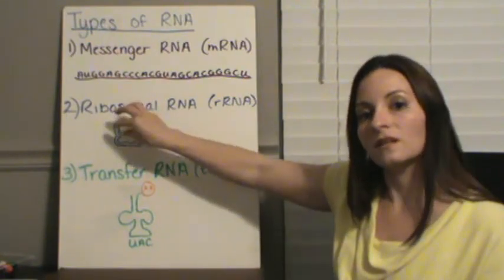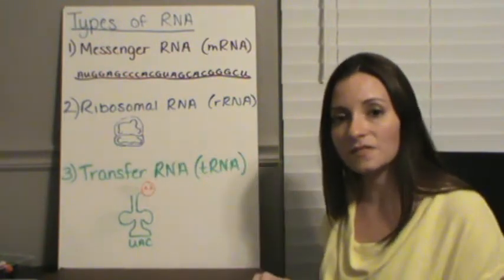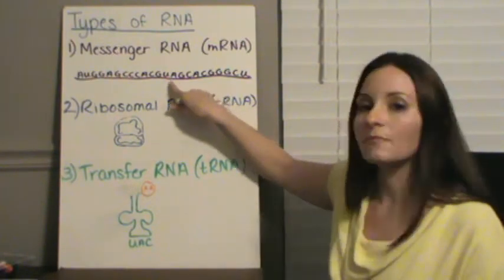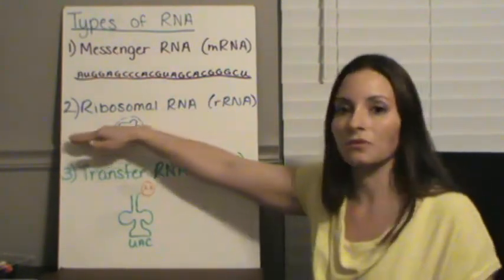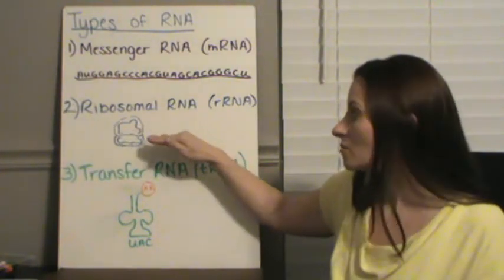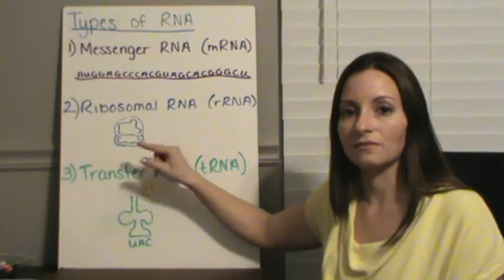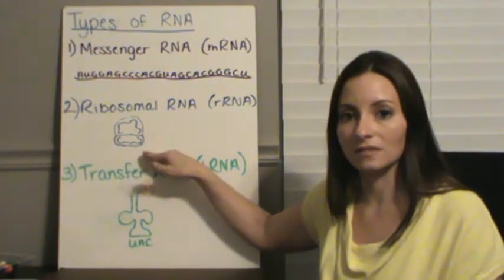They're not going to be a long big strand like messenger RNA is. It's going to be a cluster of smaller strands set together. And what's going to happen is this messenger RNA is actually going to go through this ribosome, through the ribosomal RNA, so that the ribosomal RNA can read it. The ribosomal RNA is going to read the message.